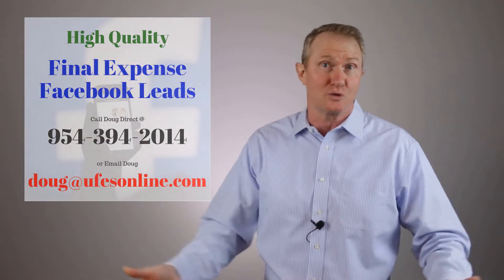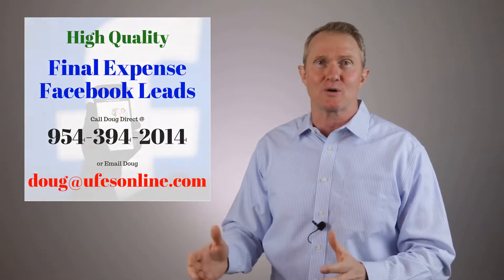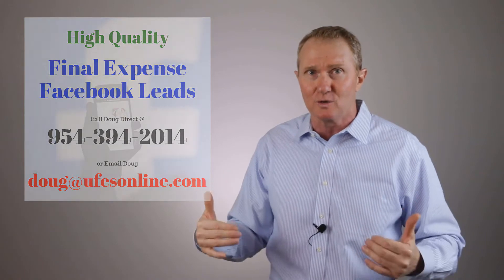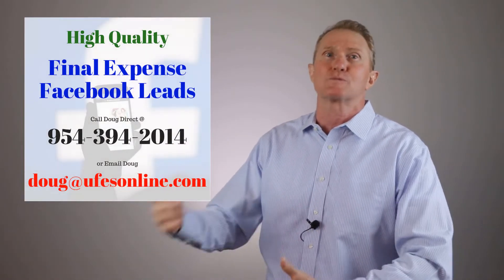The problem with mortgage protection is that there really isn't any other type of easily accessible lead, so the insurance agencies that market mortgage protection are reselling their leads over and over again. Therefore, if you're selling mortgage protection with one of those big IMOs or insurance agencies you're most likely working a lot of leads that the agents before you couldn't sell. When I walked away from selling mortgage protection it was mainly because of the issues with the leads.